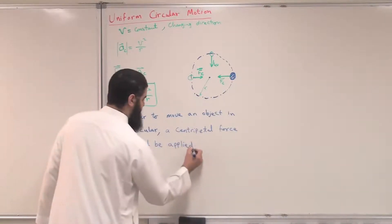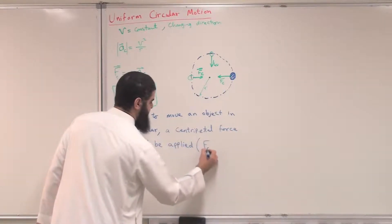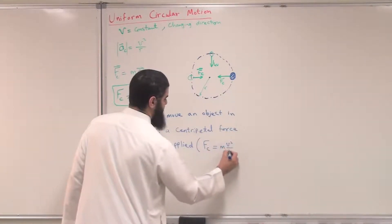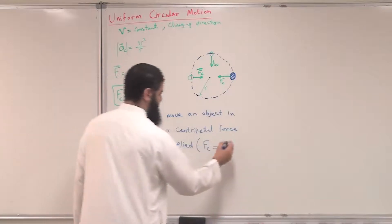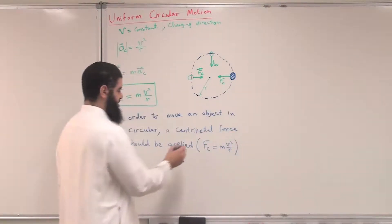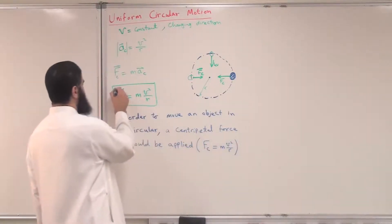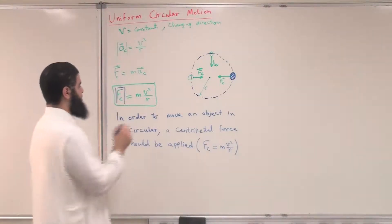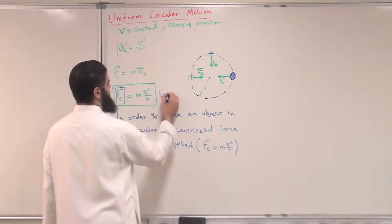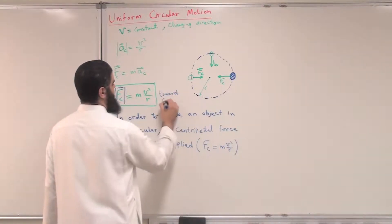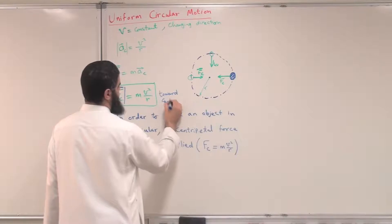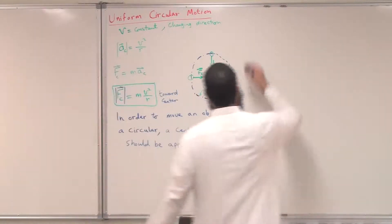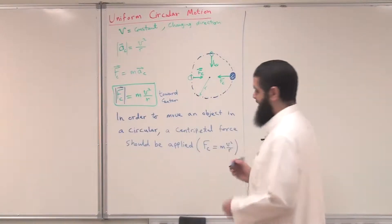The centripetal force FC equals M·V² over R. Its direction should be toward the center of the circular path. This is the magnitude of FC, and its direction is always toward the center.